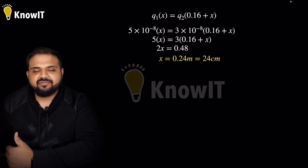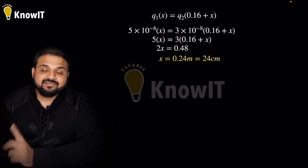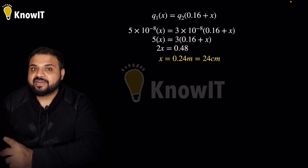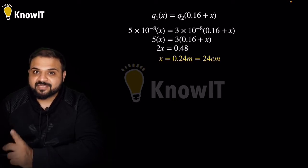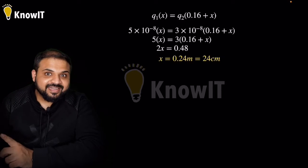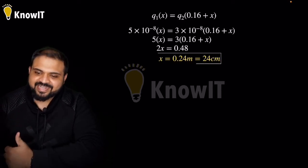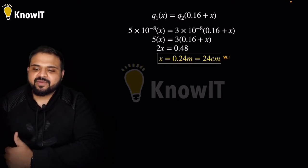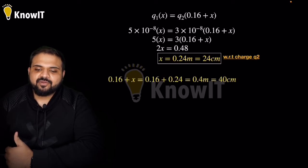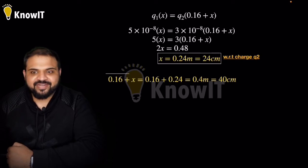X = 0.24 meter, that is 24 centimeter. Now, this distance was found with respect to Q2, but we need the distance with respect to Q1. So we add 0.16 to it: 0.16 + 0.24 = 0.40 meter, that is 40 centimeter from Q1. And here our first question is complete.